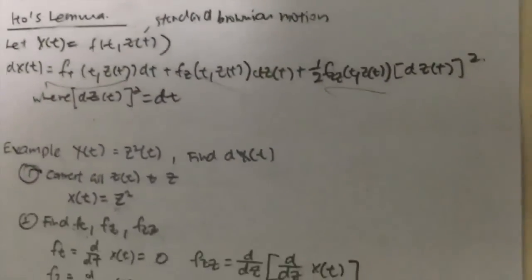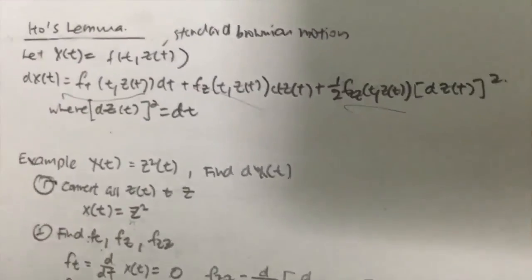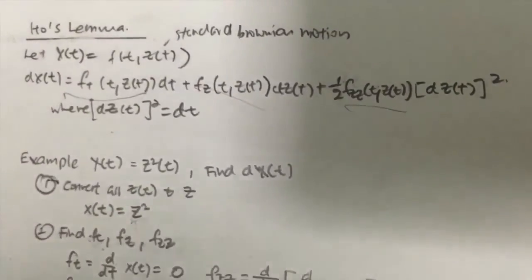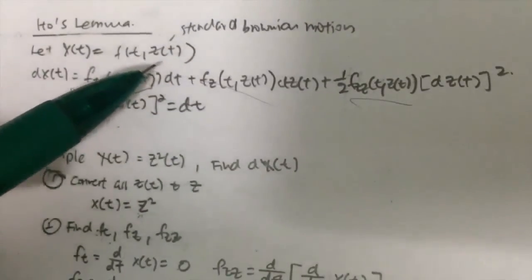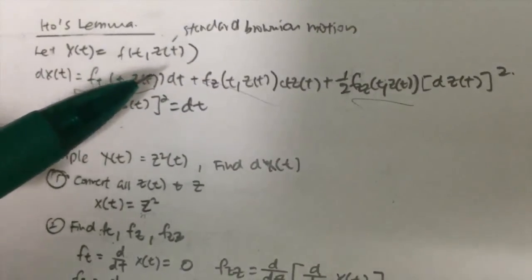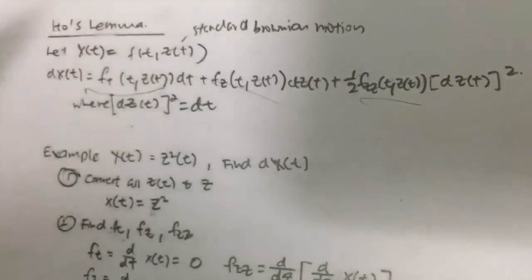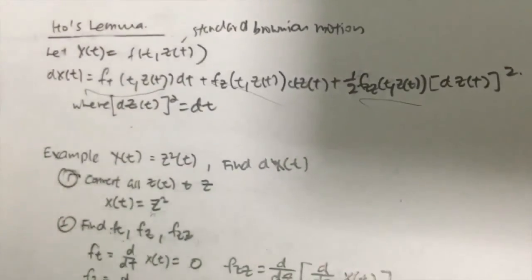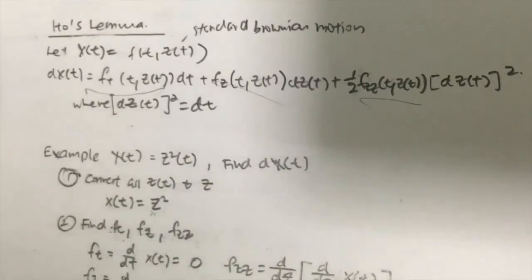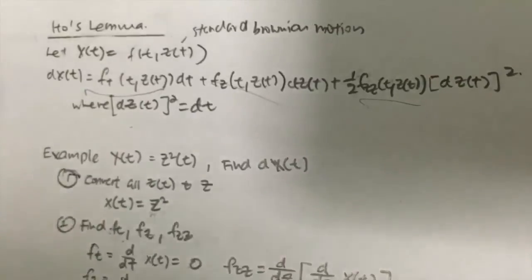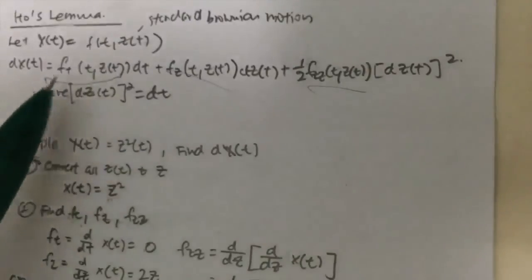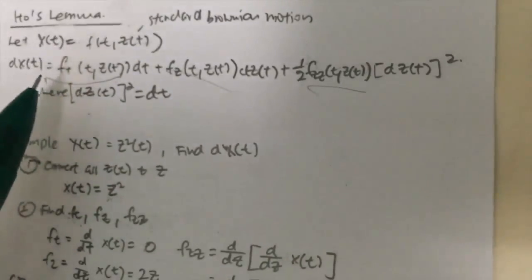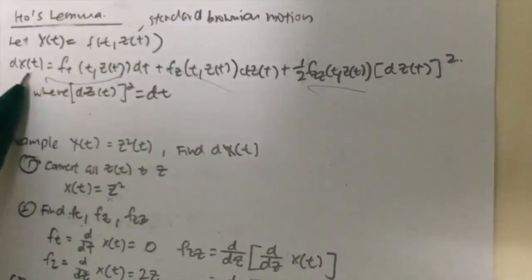So the idea of the Ito's Lemma is basically because in your X(t) itself, there is a Z(t), which is a random variable that follows a standard Brownian motion. This standard Brownian motion basically means that it is a part of a stochastic process or is a type of stochastic process, which is why we will use the Ito's Lemma to actually find our differential equation for our X(t).